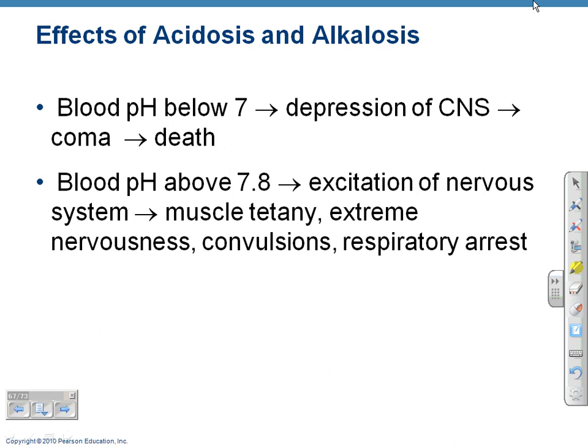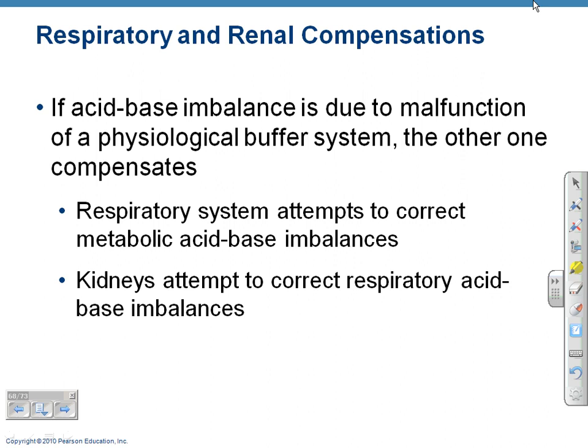Blood pH below 7 — acidosis — is going to depress the central nervous system and eventually cause death if not treated. Anything above 7.8 excites the nervous system, causing muscle tetany, extreme nervousness, convulsions, and respiratory arrest — that is alkalosis. If an acid-base imbalance is due to malfunction of one physiological buffer system, the other compensates. The respiratory system attempts to correct metabolic acid-base imbalances, and the kidneys attempt to correct respiratory acid-base imbalances.